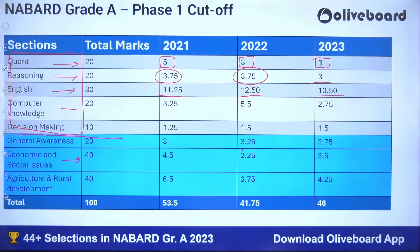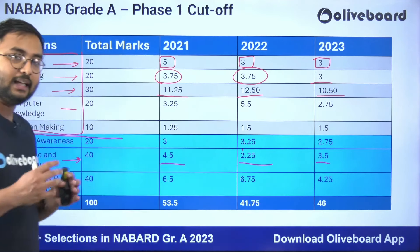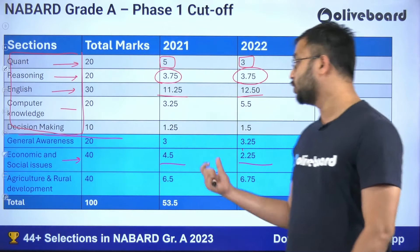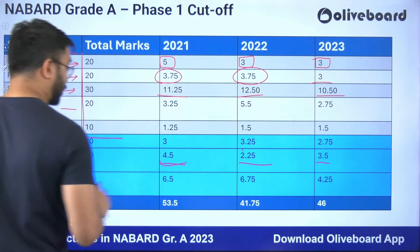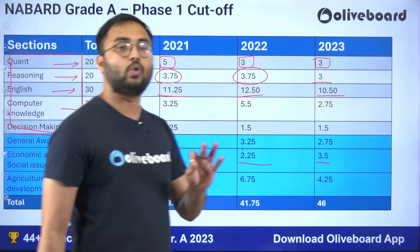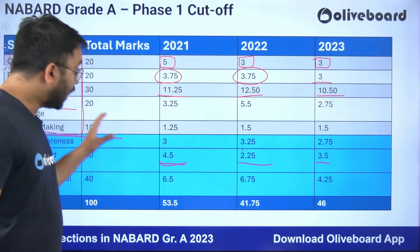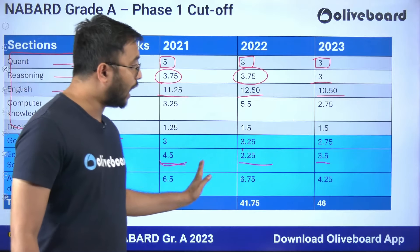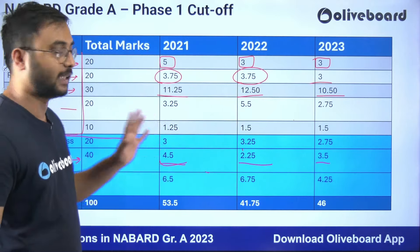For Economic and Social Issues (ESI) — out of 40 marks — the cutoff is 4.5 in one year, 2.5 in another, and 3.5 in the third. ESI for Phase 1 is more current-affairs oriented: PIB news and government schemes make up the MCQs. This section is also very scoring. I recommend a target score of 30 plus marks out of 40 for ESI. Scoring well in ESI and ARD will also give you confidence for Phase 2, where there is also a 50-mark objective component for both ESI and ARD.